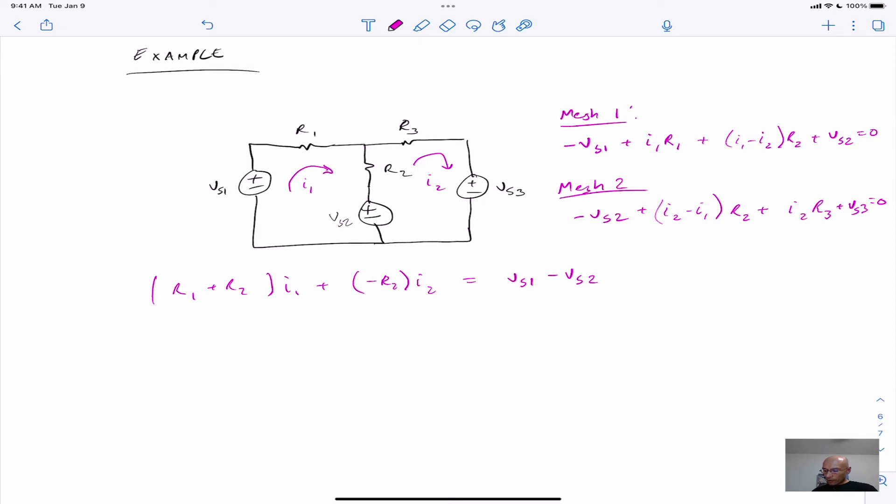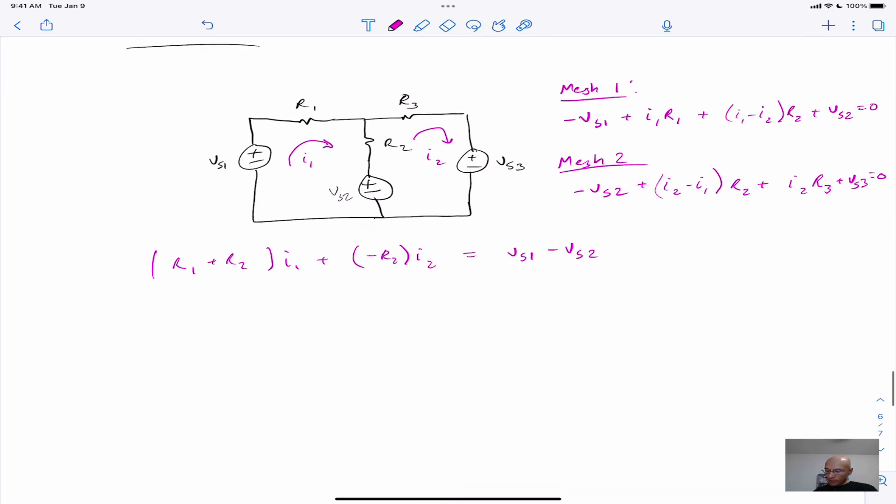So now we think of them as voltage rises as you follow the current, right? See, we follow current I1, we get a voltage rise of VS1 and a voltage rise of negative VS2.